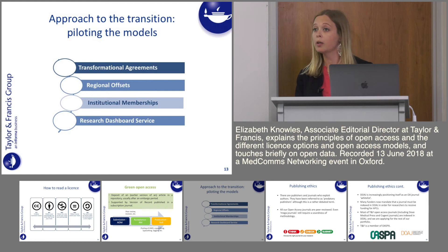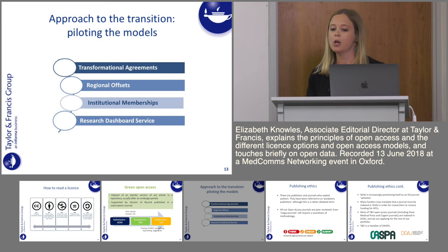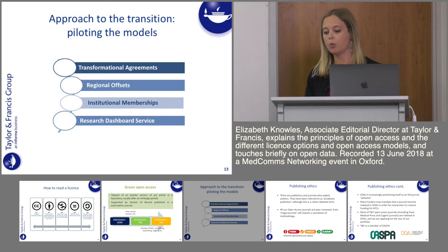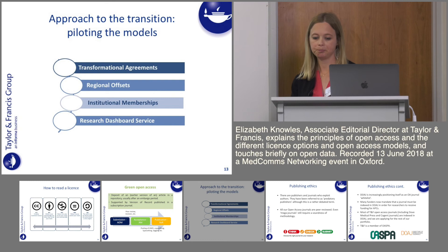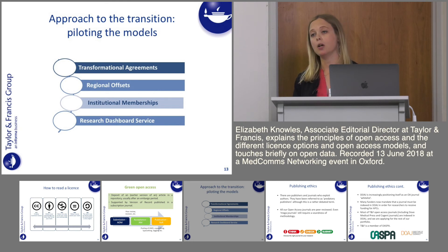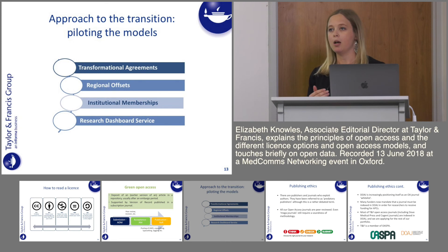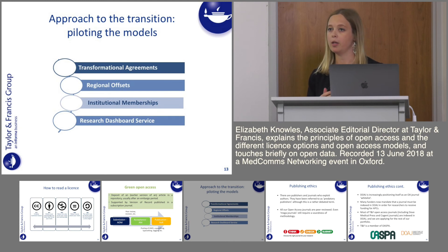Open Access is growing, albeit still a smaller part of publishing output — so how are we dealing with that transition? We're piloting a few models. We have transformational agreements in place; one I want to highlight is our agreement with the VSNU, the association of universities in the Netherlands, where from 2016 any corresponding author from a VSNU institution has their article automatically made Open Access when published in one of our hybrid journals. We have regional agreements, such as with the JISC consortia in the UK, entitling them to discounted APC rates. And we have institutional memberships where an individual library may have a prepay plan set up, allowing their users to publish Open Access in our journals and use our researcher dashboard to track how members are using that fund.